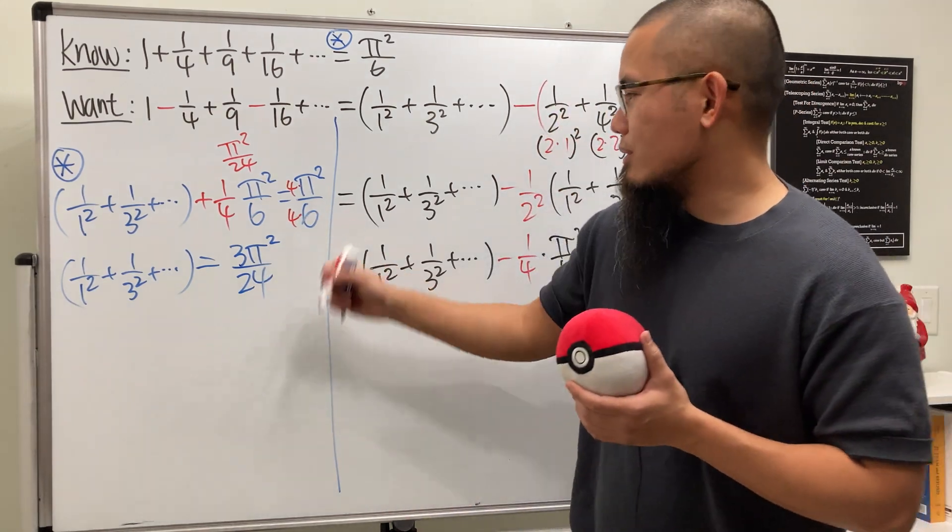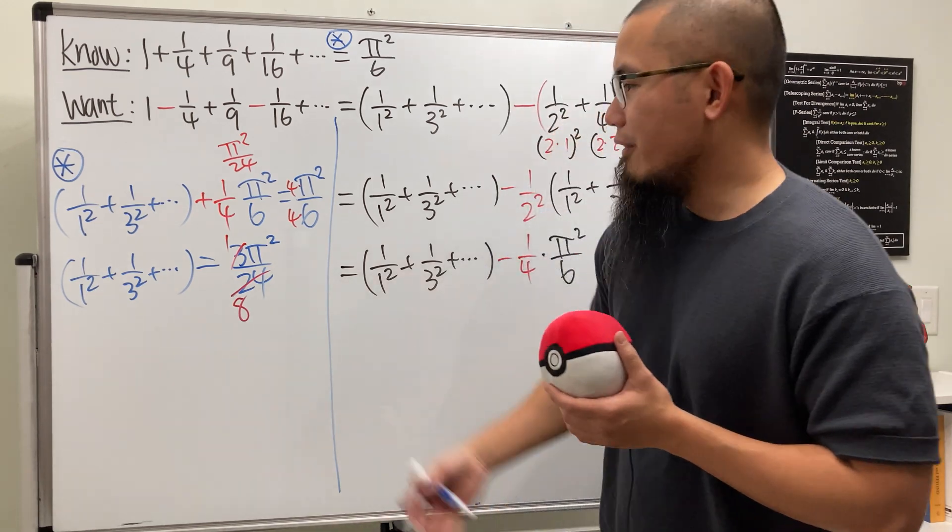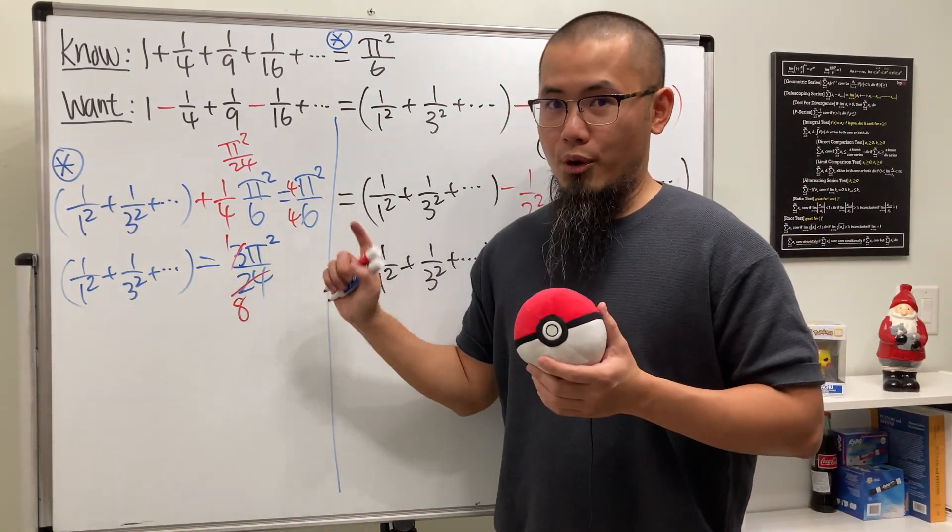Yeah, very cool. And of course, we can reduce this real quick, so this gets 1 and this is 8. So in fact, we know this is pi squared over 8.